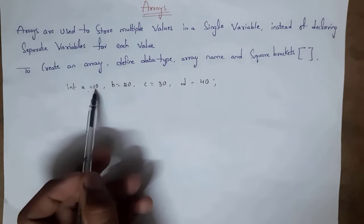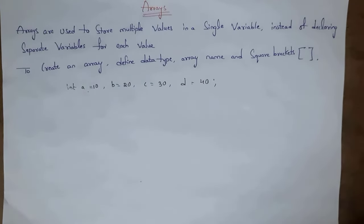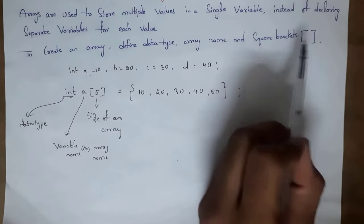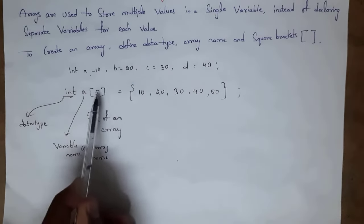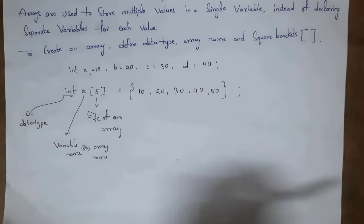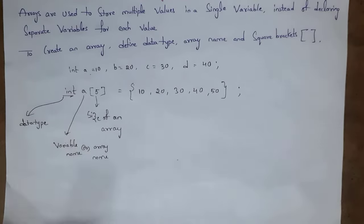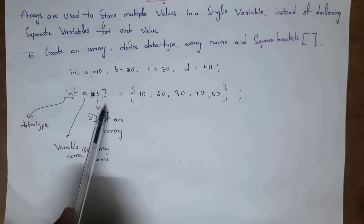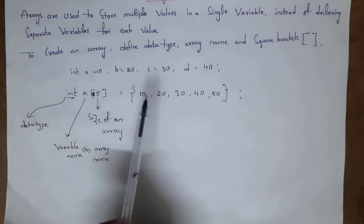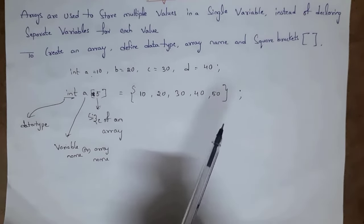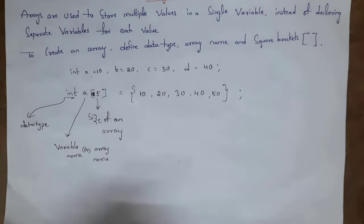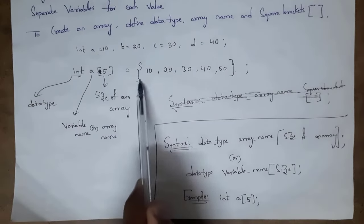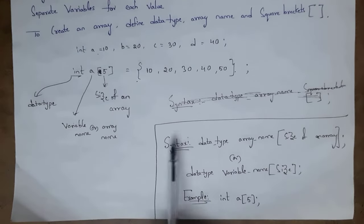Instead of taking a separate variable for each value, I can take only a single variable and include all values in it. To define an array: data type, array name, and square brackets. For example, int a[5] = {10, 20, 30, 40, 50}, where int is the data type, a is the name, and 5 is the size of the array, included in square brackets. If I want to store 15 values, I include size as 15. Values go inside curly brackets and close with a semicolon.